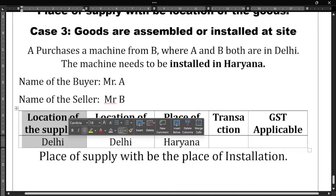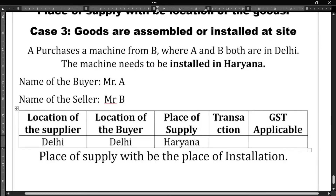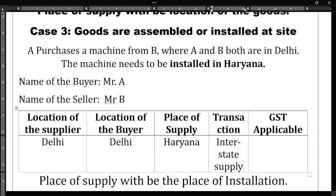The machine is installed in Haryana, so the place of supply becomes Haryana. When we compare the location of the supplier (Delhi) and the place of supply (Haryana), both are different, so it is an interstate supply. Interstate supply attracts IGST. This covers Case Number 2 and Case Number 3. In the next video we will discuss Case Number 4.